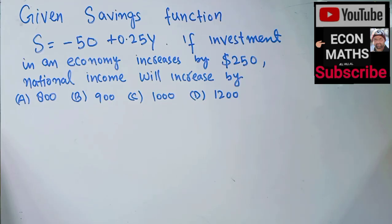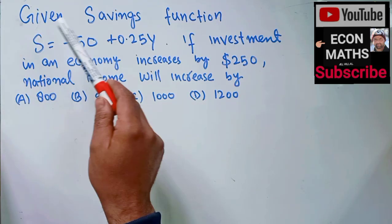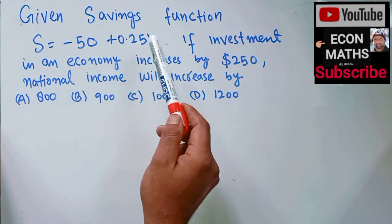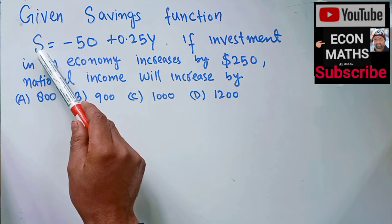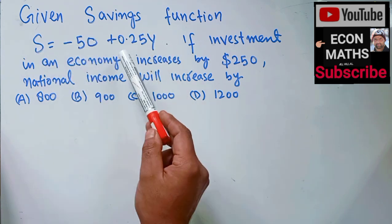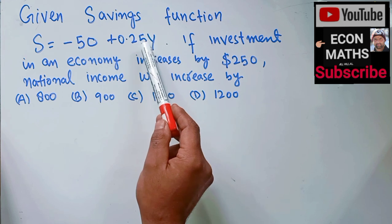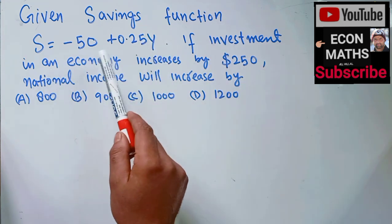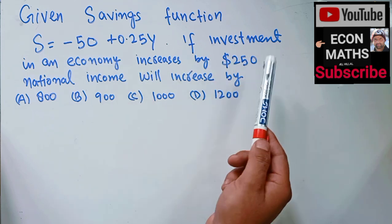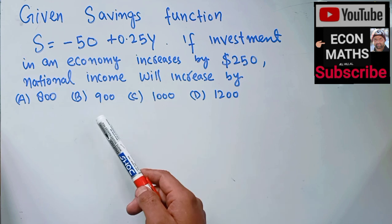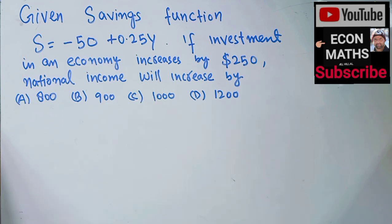In this video we will solve a question on investment multiplier. The question is: given savings function S = -50 + 0.25Y, where S denotes savings, -50 is the autonomous savings when income is zero, 0.25 is the marginal propensity to save, and Y denotes income. If investment in an economy increases by $250, we need to find out the increase in national income.